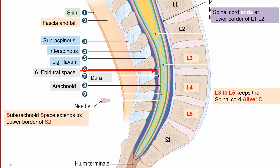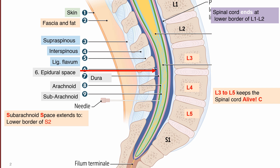After the dura mater, we reach the arachnoid mater. Following the arachnoid mater, we have the subarachnoid space. This is the space where there is the flow of cerebrospinal fluid. Hence, we will end our spinal needle at this level.